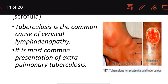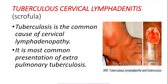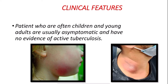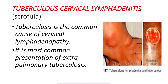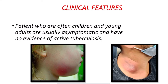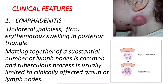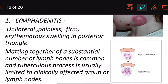In tubercular lymphadenitis, multiple lymph nodes are swollen. The clinical features include unilateral, painless, firm, erythematous swelling — meaning there is redness and swelling in the posterior triangle of the neck.